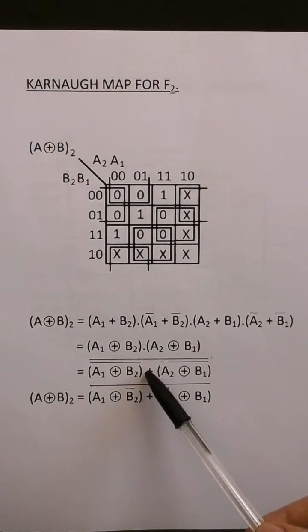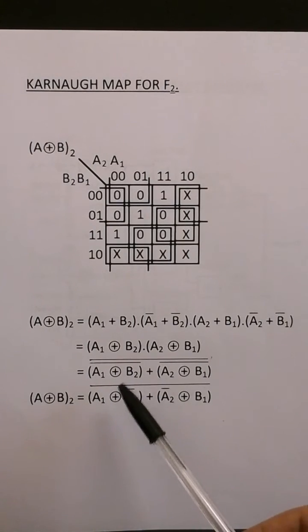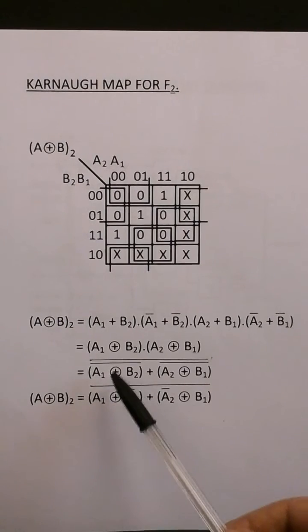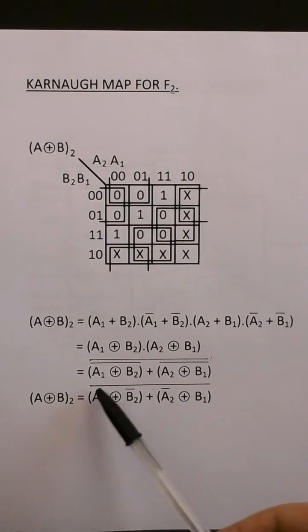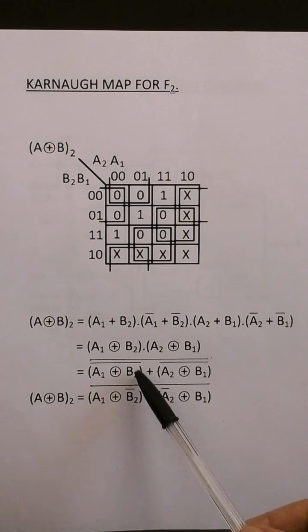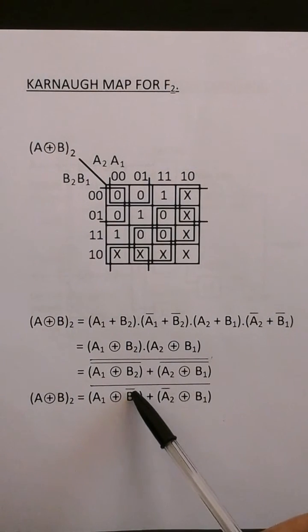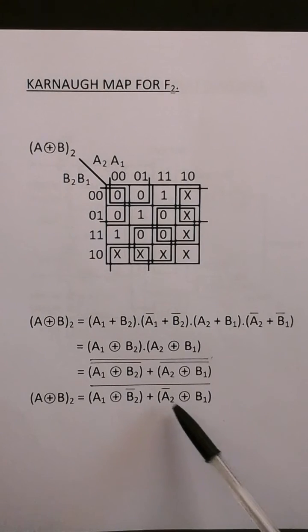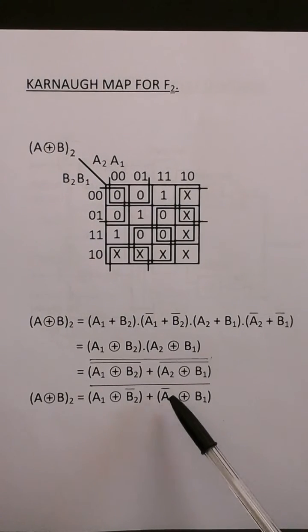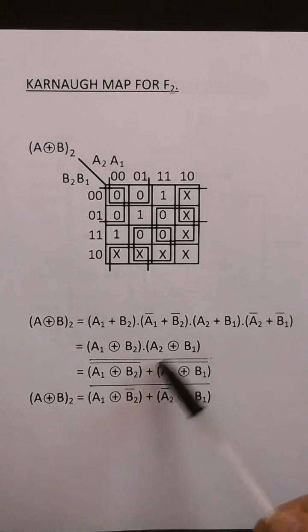And I've used De Morgan's theorem to use a nor function. So they complement the inputs, complement the output change to sign. And I've used complemented B2. So that's equivalent to an exclusive nor gate with one input complemented. And the same trick here. I've complemented A2. So that's equivalent to an exclusive nor gate.